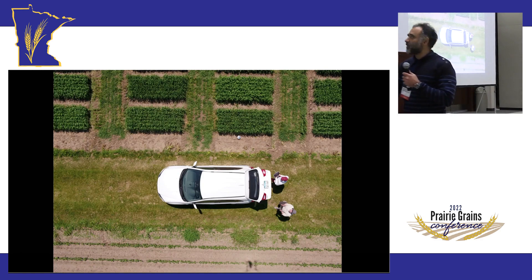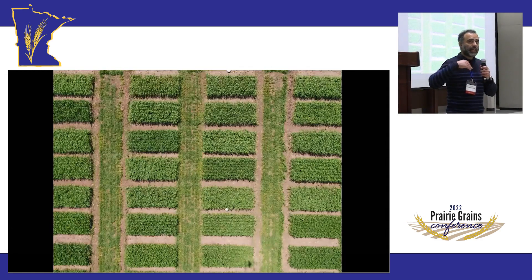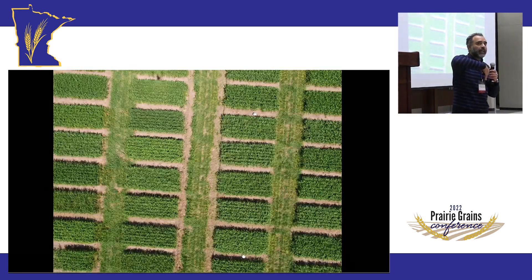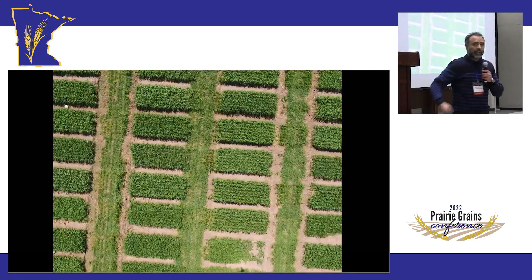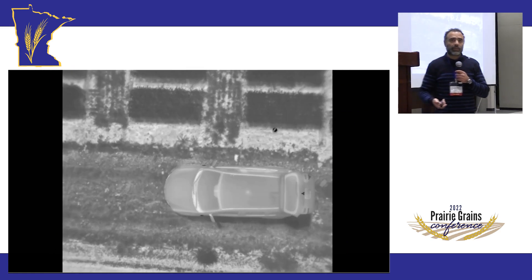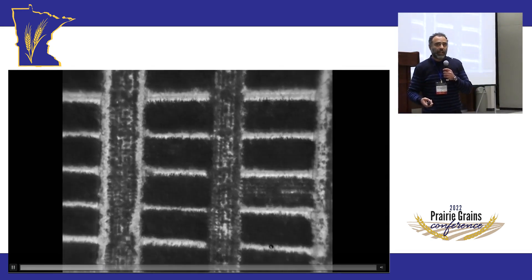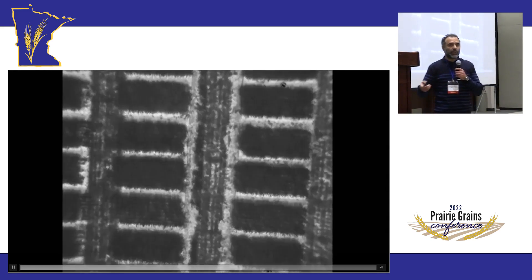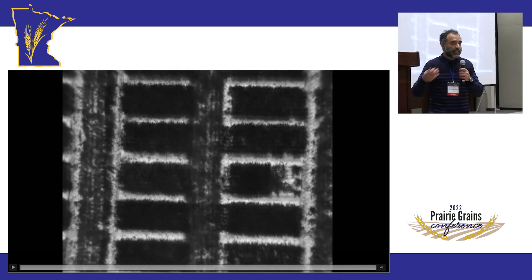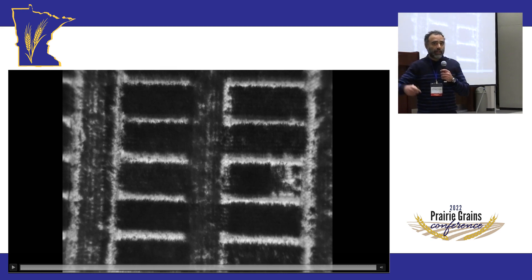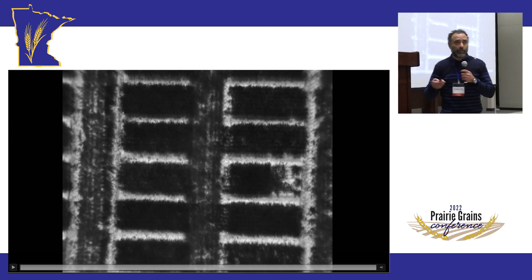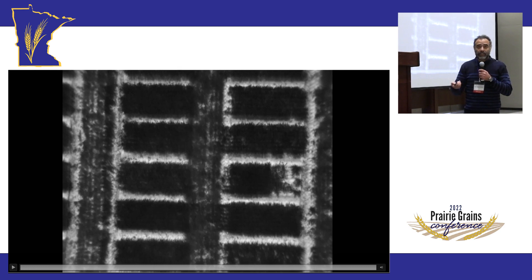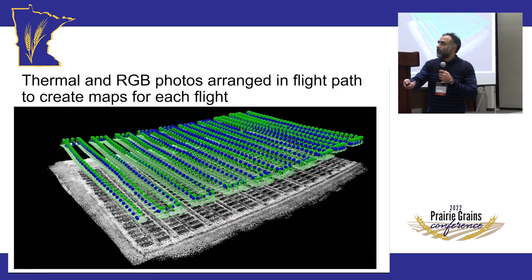The drone flies over part of the trial, then rotates, flies the other way, and continues in a zigzag pattern until it covers the entire trial. This is shown in the visible RGB spectrum. The same pattern is shown in infrared as well. We end up with two layers of images: one in RGB, which allows us to separate green canopy from brown soil. Once we identify the green pixels, we overlay the thermal camera data, allowing us to assign average temperatures to each plot.